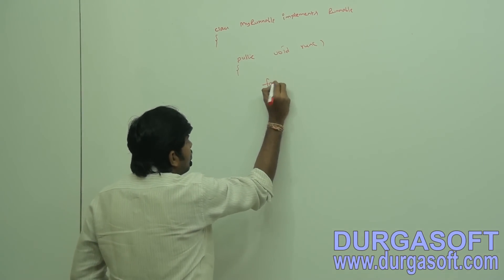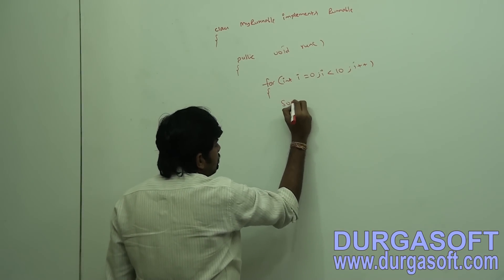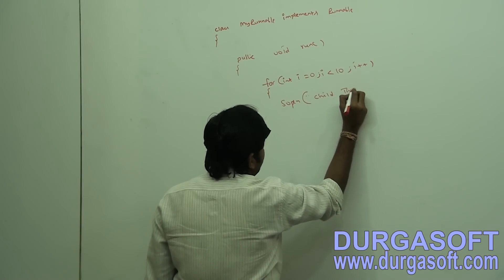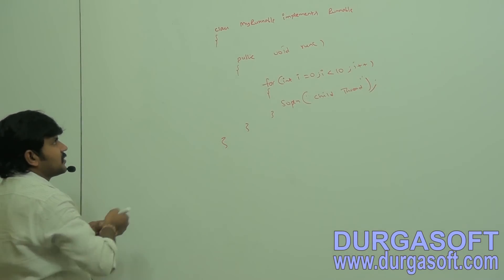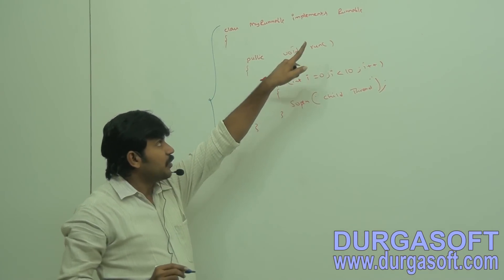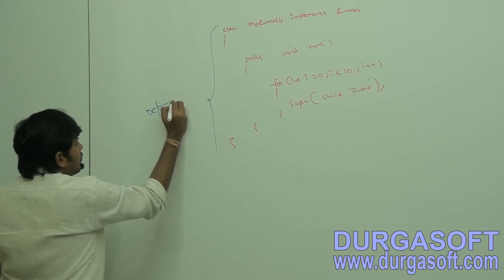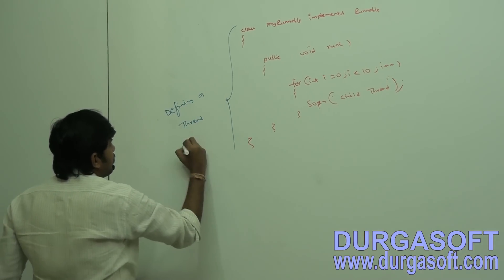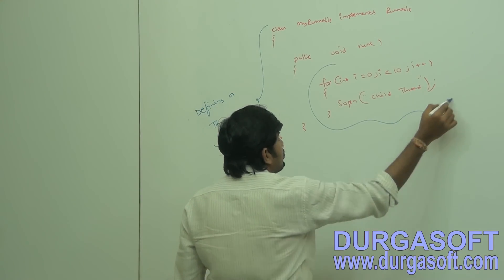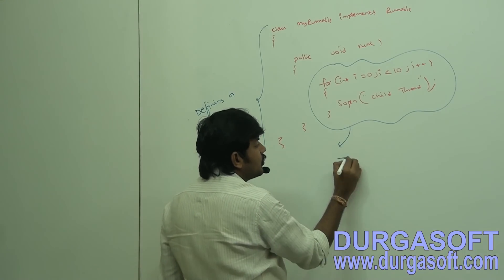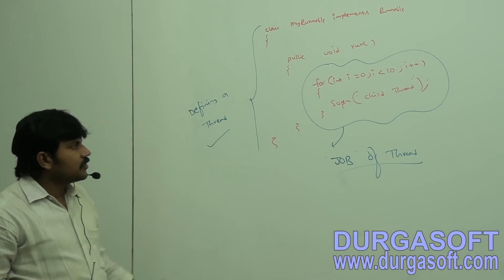Inside the run method: for (int i = 0; i < 10; i++) { System.out.println("Child Thread"); }. Writing a class that implements Runnable and implementing the run method with some code — this total process is by default considered as defining a thread. The code written inside the run method is considered the job of the thread.